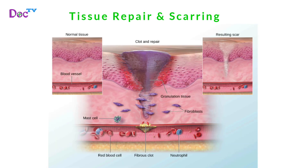When tissue is damaged, mast cells release histamine, an inflammatory chemical that dilates blood vessels and increases blood flow to the area. Blood vessels supply the area with platelets, which form a fibrous clot, as well as neutrophils and macrophages, which consume bacteria and remove damaged tissue and debris. As the inflammatory process continues, the clot hardens into a scab and fibroblasts secrete collagen to form granulation tissue that matures into scar tissue. The repair process is complete once the epithelium has regenerated to its normal thickness, the blood vessels are restored, and the scab has detached.